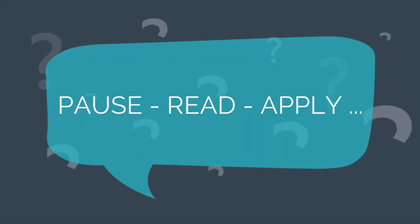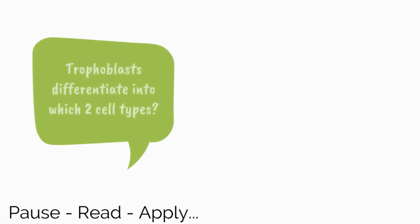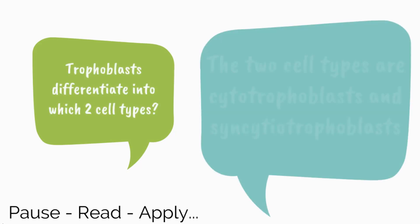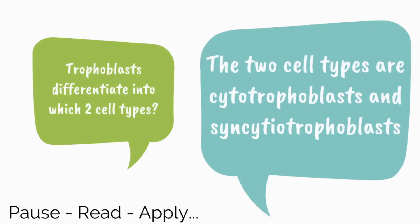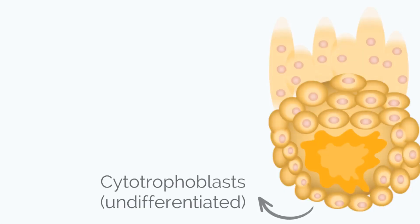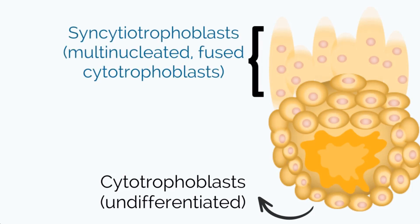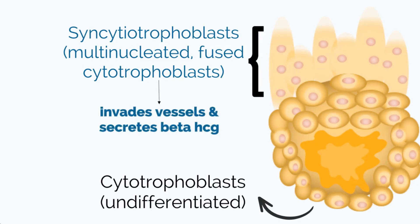Let's pause and apply: trophoblasts differentiate into which two cell types? The two cell types are cytotrophoblasts and syncytiotrophoblasts. Cytotrophoblasts are undifferentiated stem cells of the placenta. Syncytiotrophoblasts are multinucleated cells formed by fusion of proliferating cytotrophoblasts. The syncytial layer is responsible for the invasion of maternal vessels and secretes HCG, which is critical in maintaining the corpus luteum in early pregnancy.